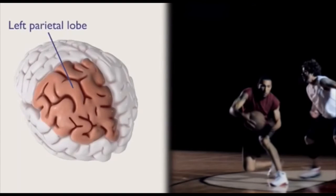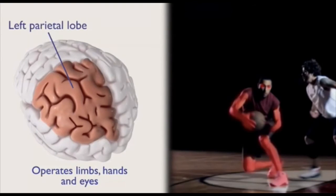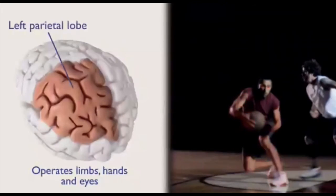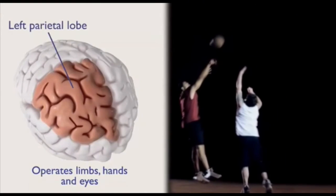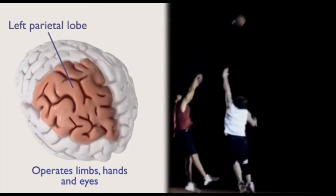The left parietal lobe is specialized for operation of limbs, hands, and eyes within immediate interpersonal space. On the basketball court, this is essential for moving your hands where you want in order to dribble the ball and keep it away from an opponent.